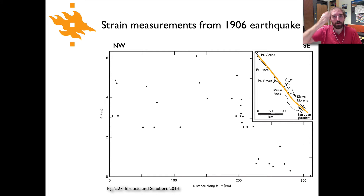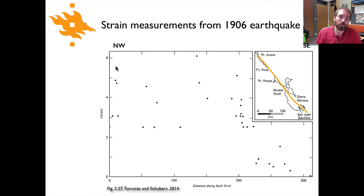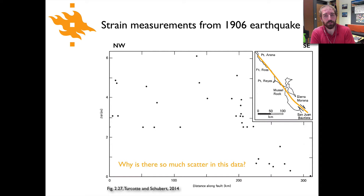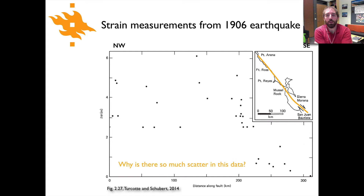Here's some of the data about strain following the 1906 earthquake in San Francisco. What's shown on the plot is distance along the fault from northwest to southeast, starting up near Point Arena and moving down towards San Juan Bautista. The vertical axis shows the displacement delta w, and you'll see there's quite a bit of scatter in this data. I'd like you to pause the video for a moment and think about what kind of measurements might be made and whether you have some ideas about why there is so much scatter in these observed strain values.